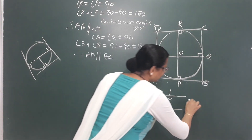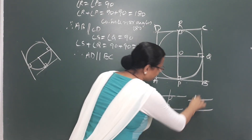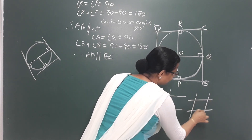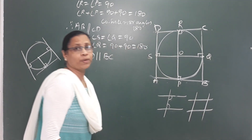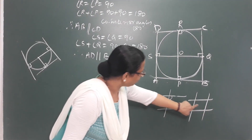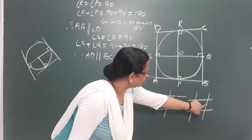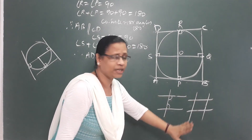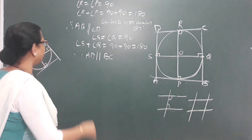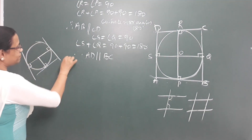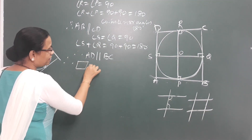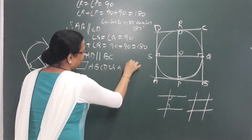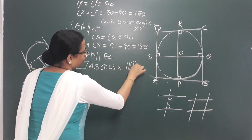That means these two pairs of lines are parallel, so ABCD is a parallelogram. In a parallelogram, opposite sides are equal and parallel, so we can write that ABCD is a parallelogram.